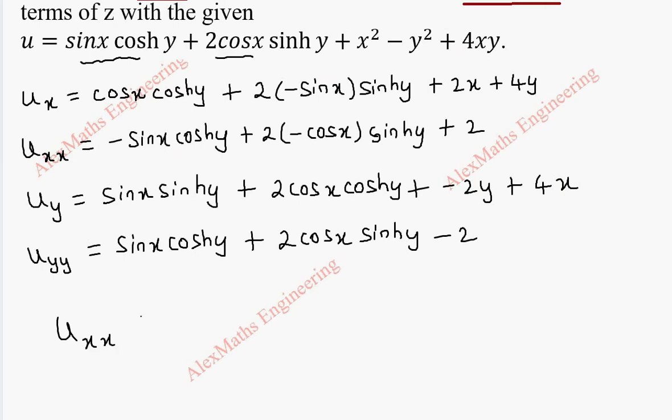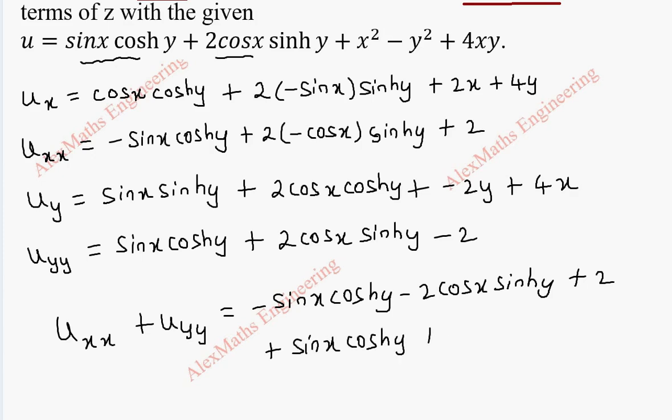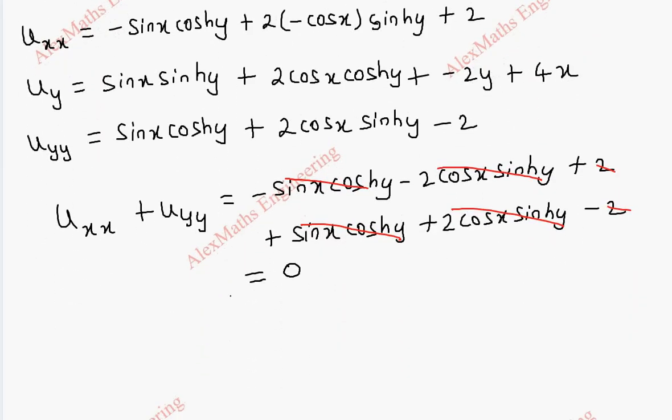Now, if I take u_xx plus u_yy, let's copy all the u_xx term minus sin x cosh y minus 2 cos x sinh y plus 2. Plus the u_yy terms: sin x cosh y plus 2 cos x sinh y minus 2. Sin x cosh y gets cancelled, 2 cos x sinh y minus 2 cos x sinh y plus 2 and minus 2. So, after cancelling, we get this as 0. So, it satisfies the Laplace equation and hence,